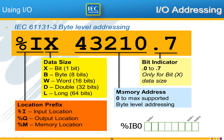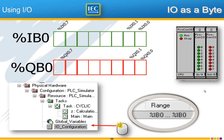The maximum address is whatever is supported by that particular PLC. The dot and any number from 0 to 7 is only valid when you've used data size bit (X), because you're specifying which particular bit of the byte is being used. For byte %IB0, which has 8 bits, you have bits .0 through .7. And that is what we see in this PLC simulator — 8 inputs and 8 outputs, each existing as a byte.